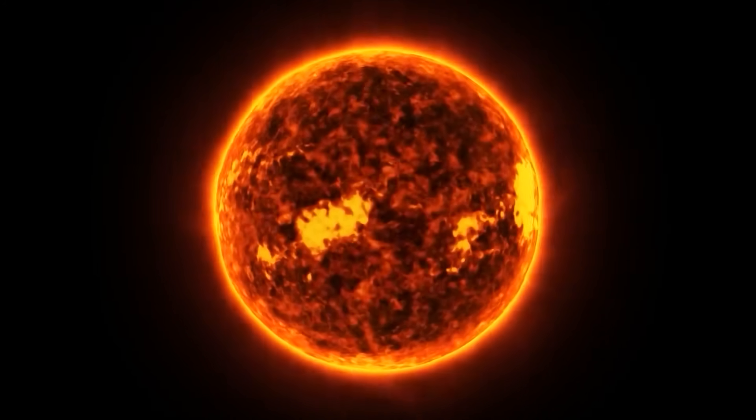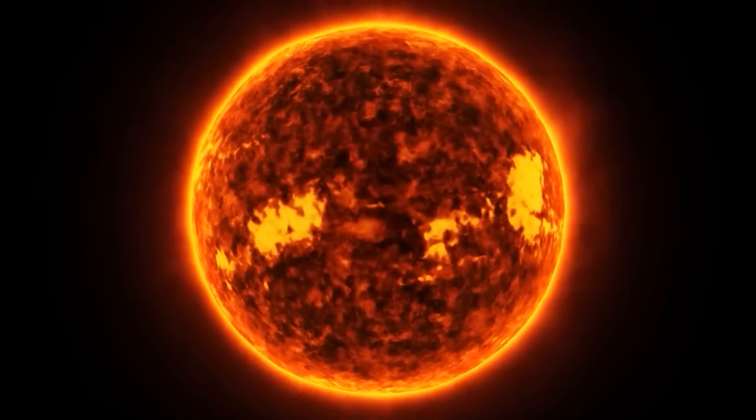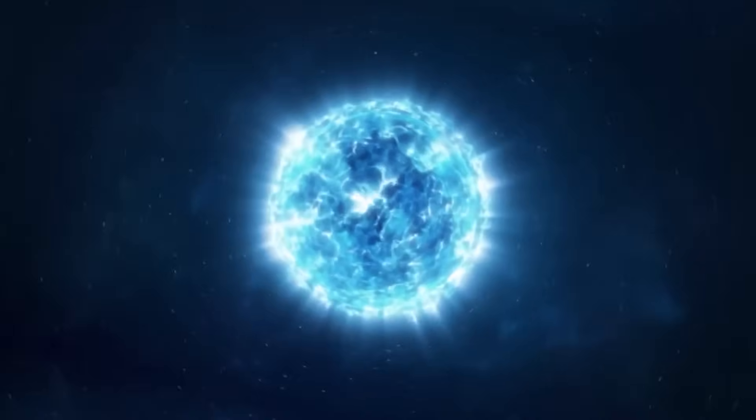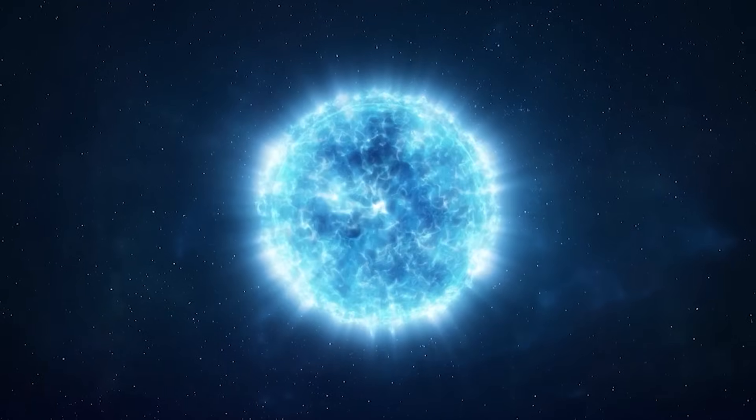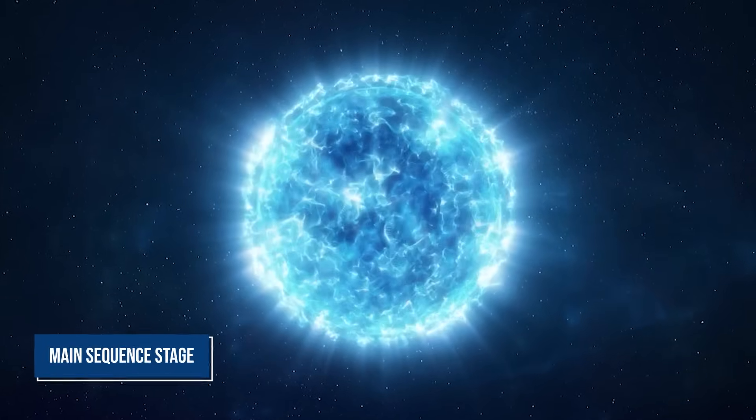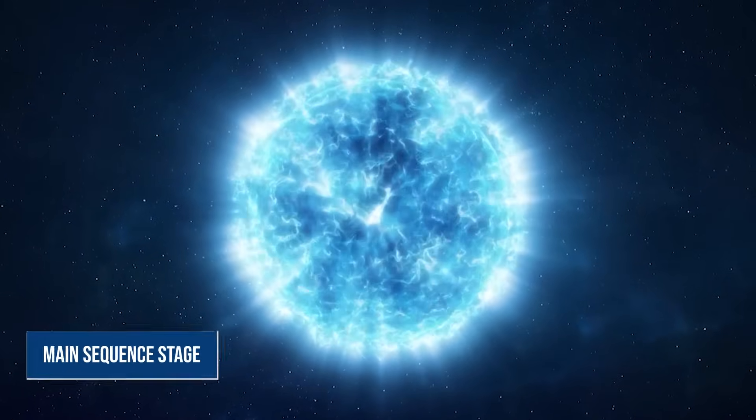Born from the gravitational collapse of gas within molecular clouds, stars like Betelgeuse kickstart their journey by burning hydrogen in their cores. This initial phase, known as the main sequence stage, lasts for millions of years and forms the backbone of a star's life.